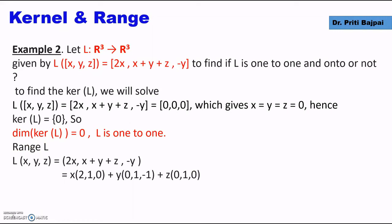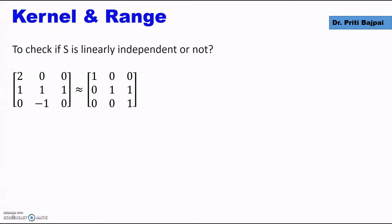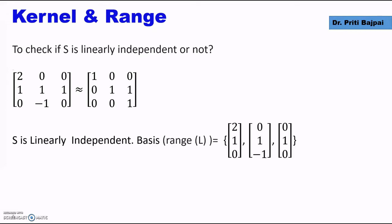For the range, the image (2x, x + y + z, -y) can be written as x(2, 1, 0) + y(0, 1, -1) + z(0, 1, 0). Taking the vectors (2, 1, 0), (0, 1, -1), and (0, 1, 0) and checking linear independence by row echelon form, we see each column has a pivot — so the subset is linearly independent. The basis of range L consists of those three vectors and the dimension of range L is 3, which equals the dimension of R³. Therefore L is onto.